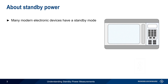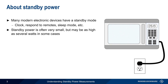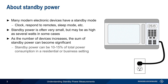Many if not most electronic devices have some kind of standby or low power mode. For example, the clock on a microwave oven still requires power even when that oven is not being operated. Another example is a television which cannot be entirely off if it has to respond to a remote. This standby power is often very small, often on the order of milliwatts, although in some cases it can be as high as several watts. But as the number of electronic devices increases, the sum of this standby power can become significant. In fact, it's estimated that 10-15% or more of the total power consumption in a residential or business setting is due to devices in standby mode.